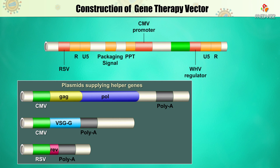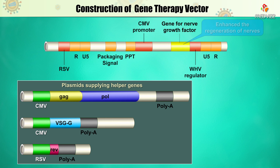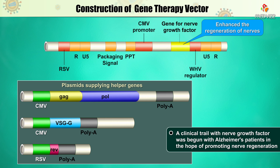The successful introduction of the fluorescent transgene in rats led to another experiment in which the vector introduced nerve growth factor into a rat brain with nerve damage. The nerve growth factor was expressed successfully and it enhanced the regeneration of nerves. Subsequently, a clinical trial with nerve growth factor was begun with Alzheimer's patients in the hope of promoting nerve regeneration.